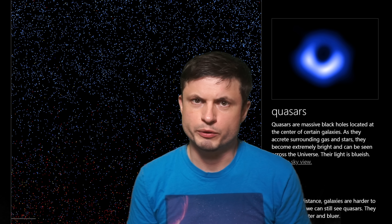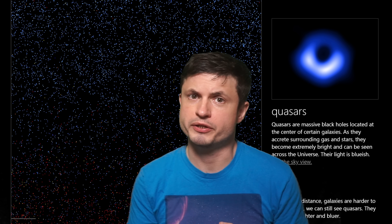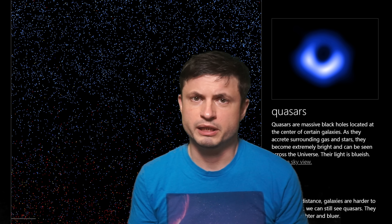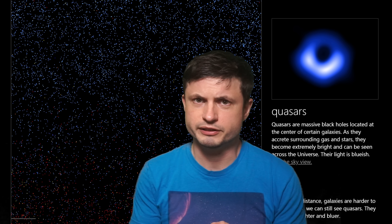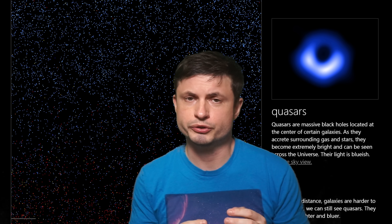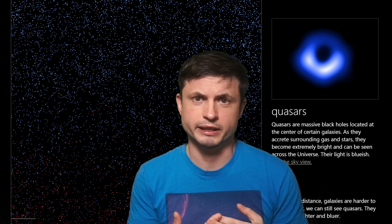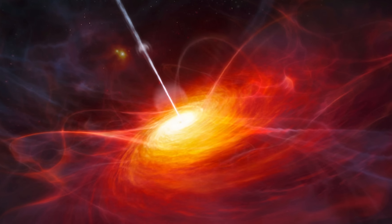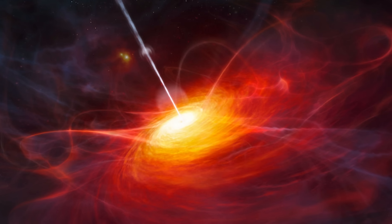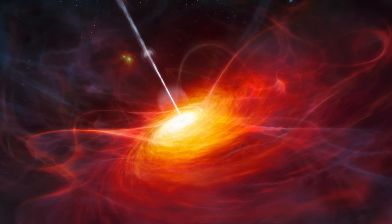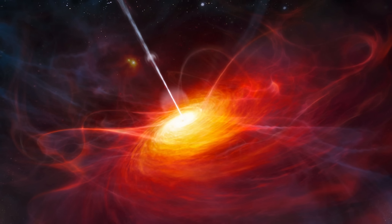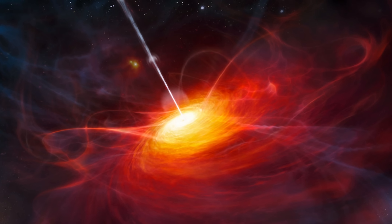We've actually discussed quasars before, and even the formation theory behind them — you can find one of those videos in the description below. But in a nutshell, these are really massive, very active galaxies whose massive black holes end up creating huge amounts of light in the center, and whose extremely powerful jets can then be seen from pretty much the limits of the visible universe. And if these jets are pointing directly at us, they become even more bright, and are actually then called blazars.